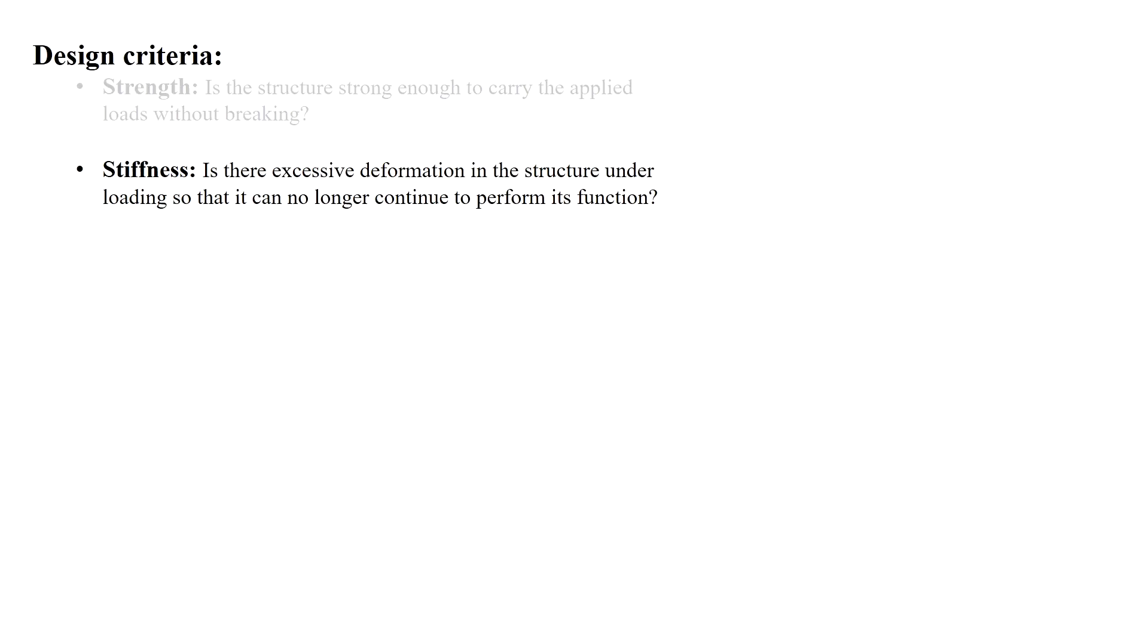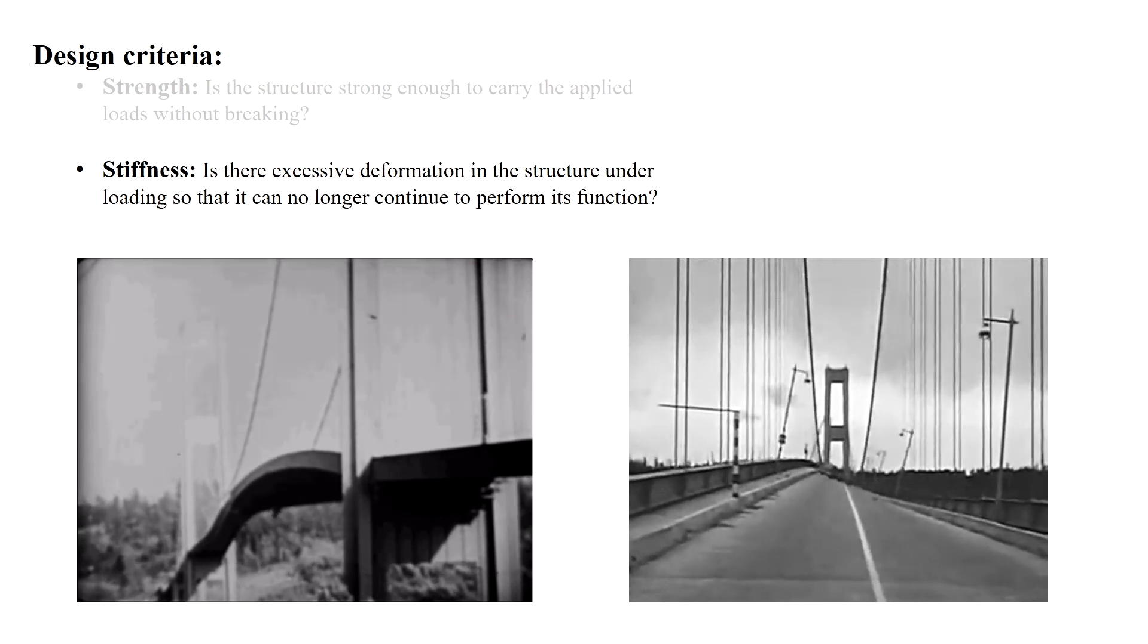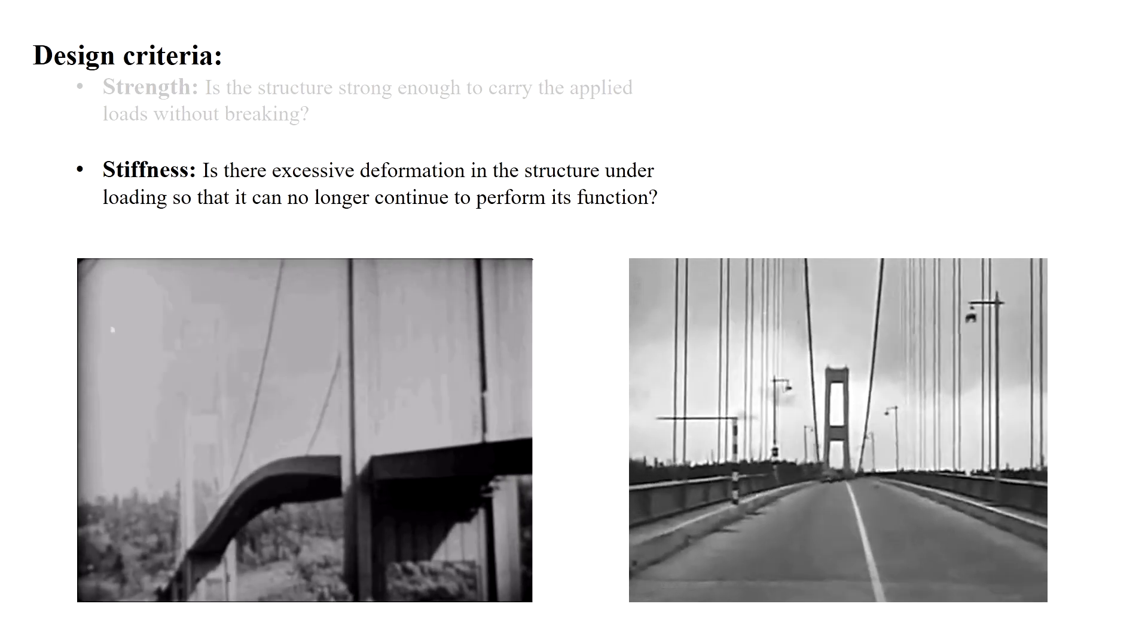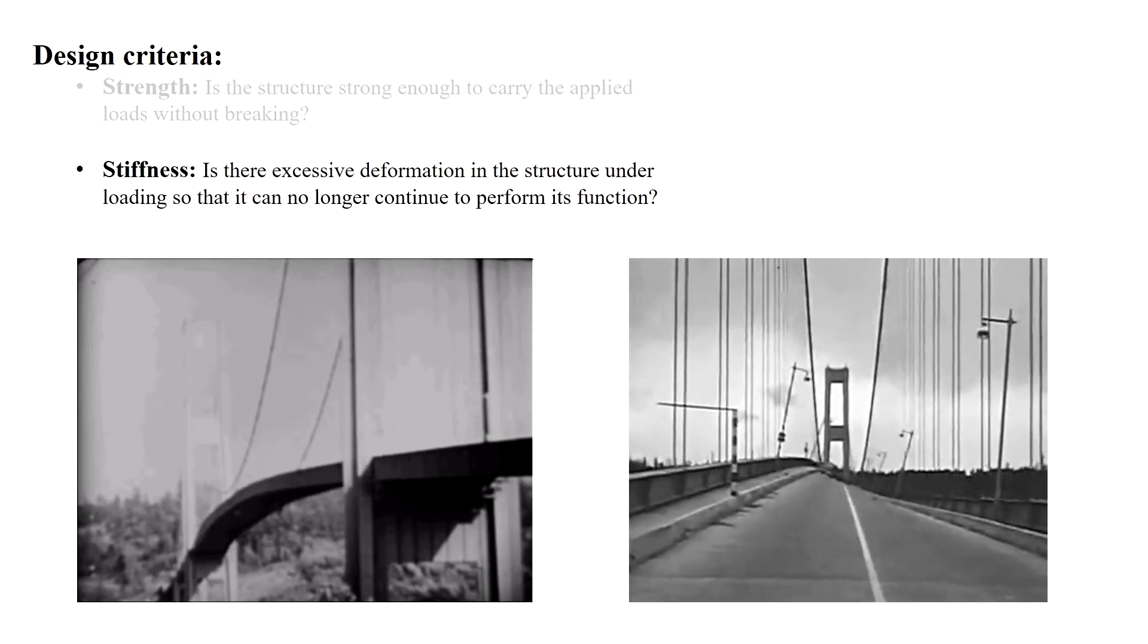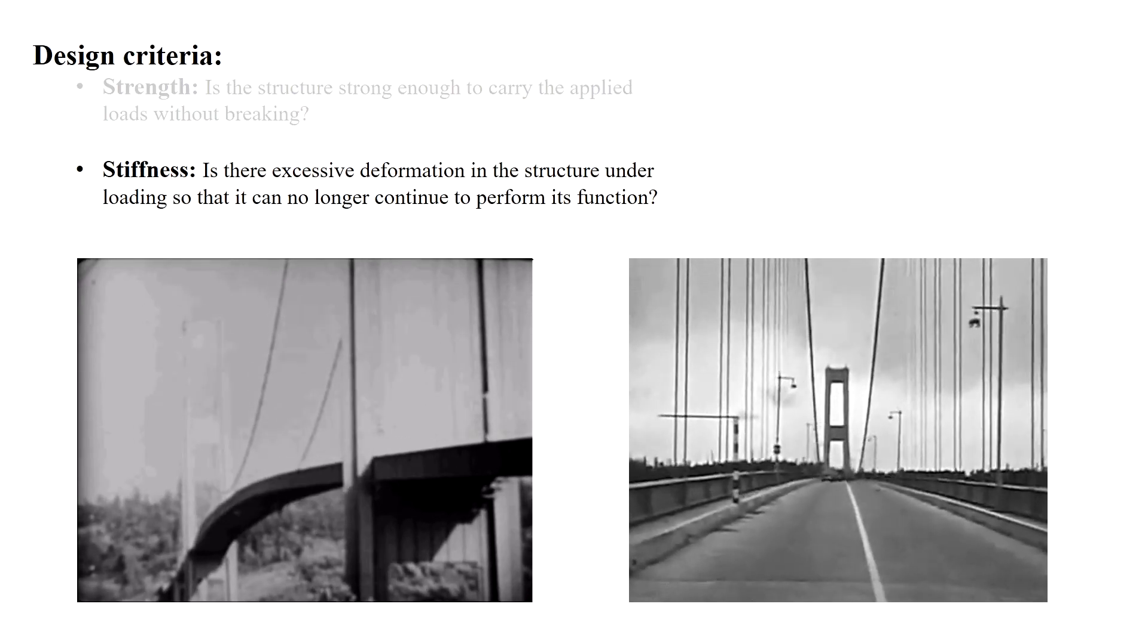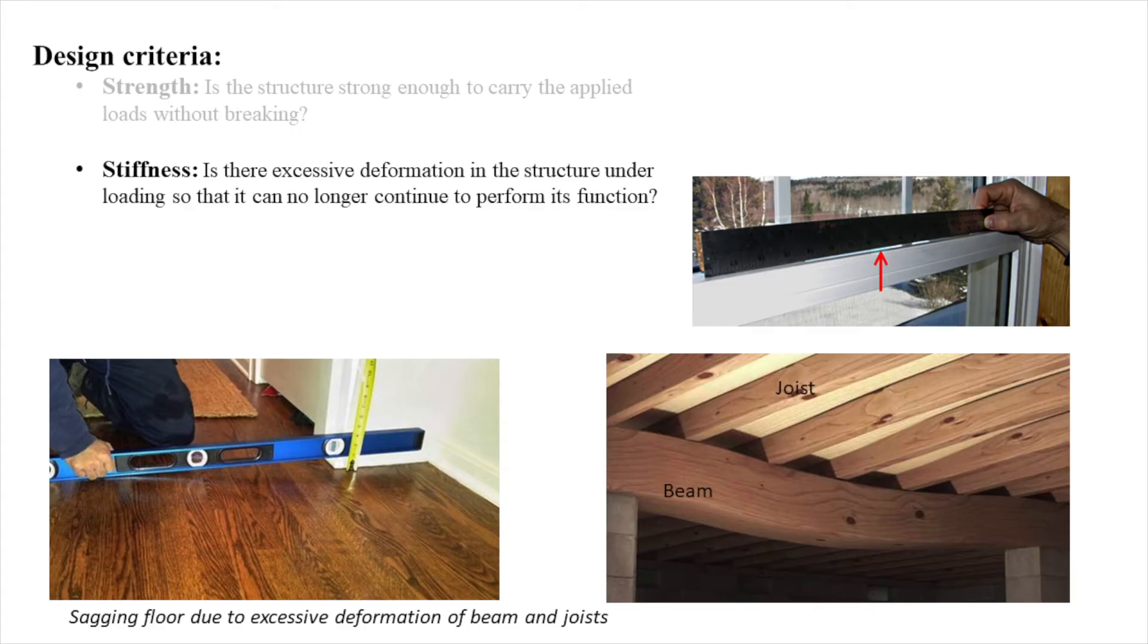The second criteria to be satisfied is stiffness, which reflects the resistance of the structure against deformation under loading. It's possible that an element is capable of carrying a load, but the deformation is too high, making the structure unusable. For example, consider a suspension bridge that is shaking due to wind. Up to a certain limit, the cables and deck will carry the applied load without any fracture, but they also deform easily, which prevents the bridge from servicing as designed. Another example is the sagging floor that happens due to excessive deformation in the load-carrying beams and joists. Even though the structural components didn't break and are still capable of carrying the applied load, the building may not be usable due to stuck doors and windows or gaps between the floors and walls.